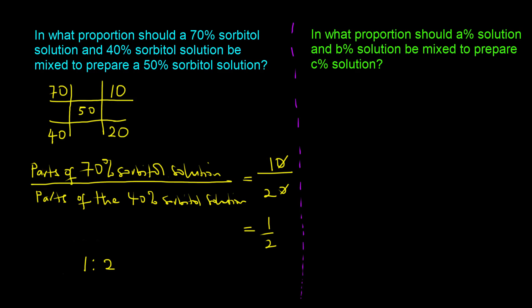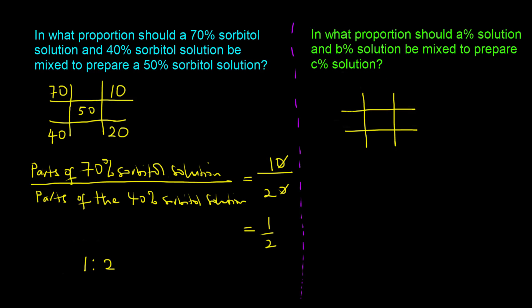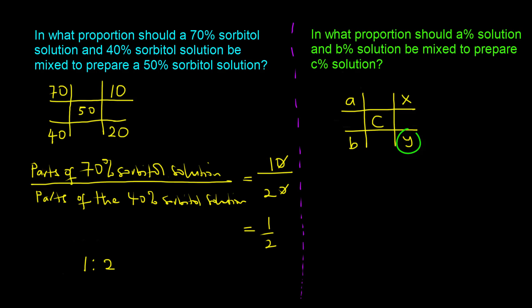Now let's find out why the alligation alternate method works using a general example. In what proportion should an A% solution and a B% solution be mixed to prepare a C% solution? We set up a grid: A% (higher strength) in the top left, B% (lower strength) in the bottom left, C% (desired) in the middle. We call the unknown parts of A as x and the unknown parts of B as y.